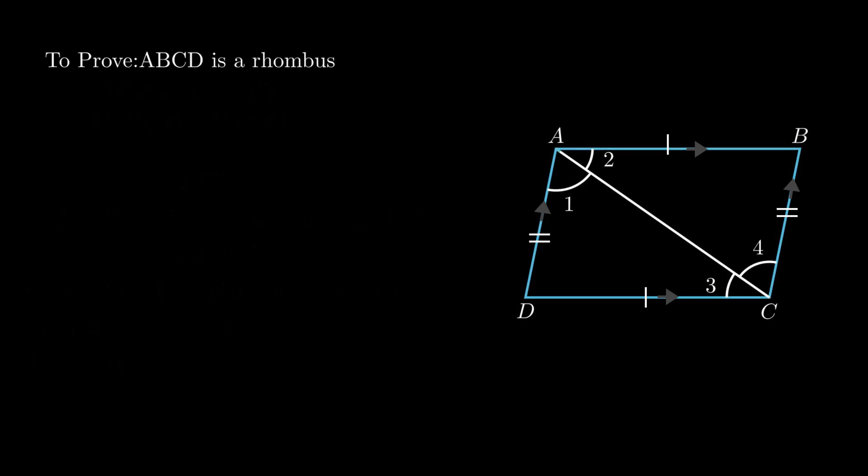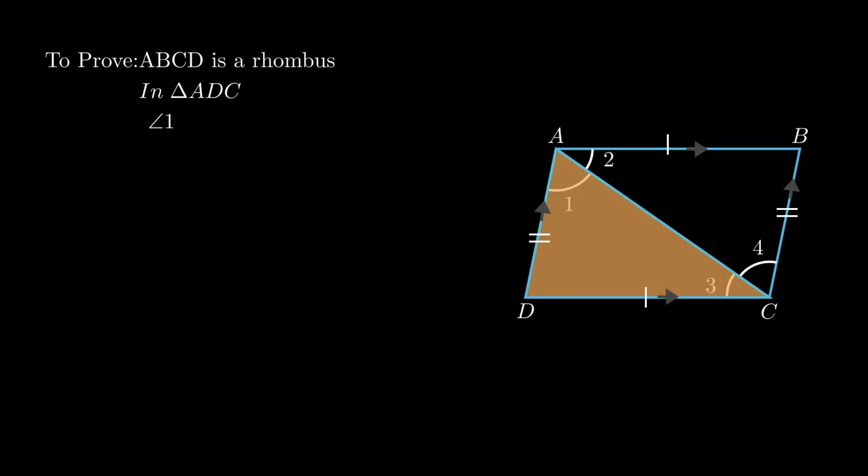Now to prove ABCD is a rhombus from the given condition, consider triangle ADC. As angle 1 equals angle 4 and angle 4 equals angle 3, therefore angle 1 equals angle 3.